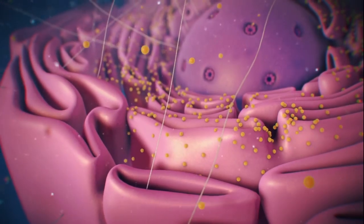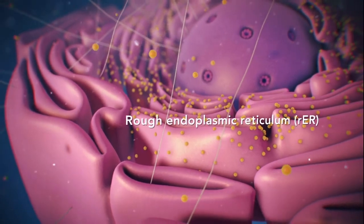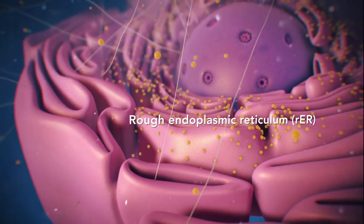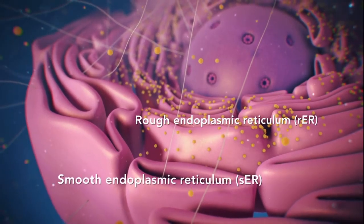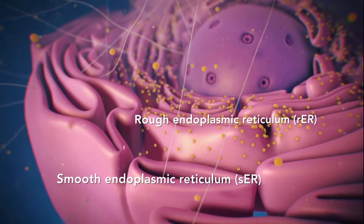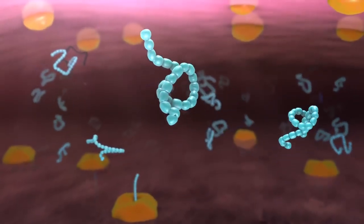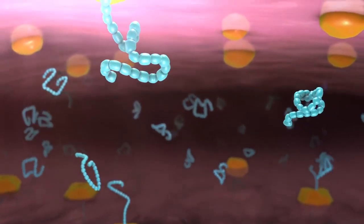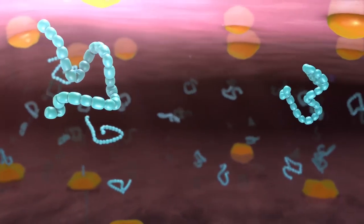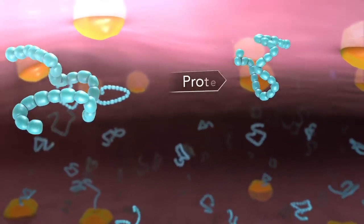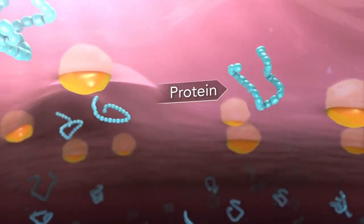There are two types of ER. Rough ER has ribosomes attached to it and smooth ER doesn't have ribosomes attached to it. The endoplasmic reticulum is a membrane-enclosed passageway for transporting materials, such as the proteins synthesized by ribosomes.